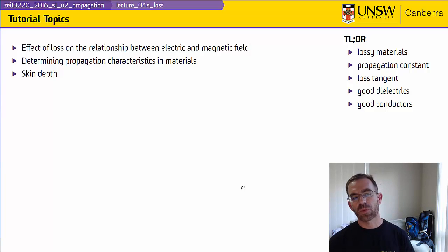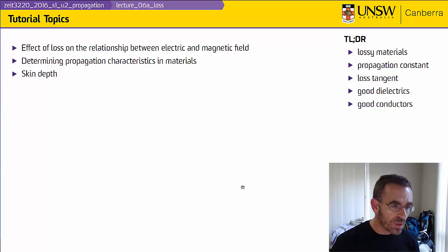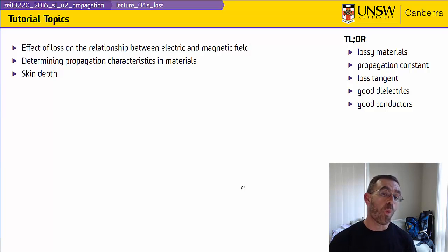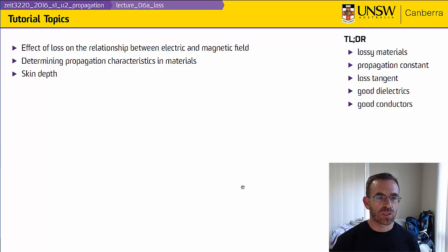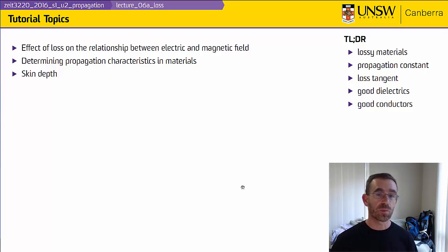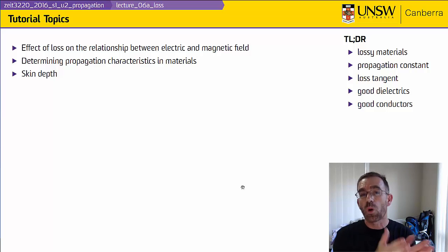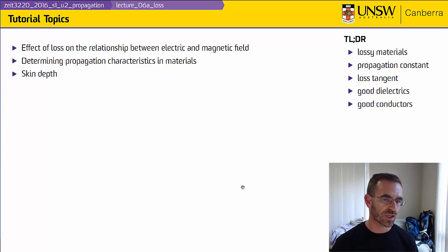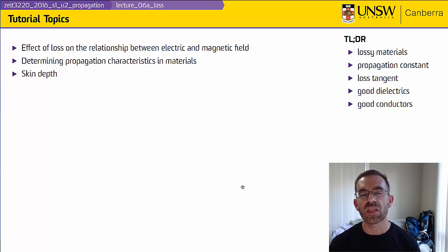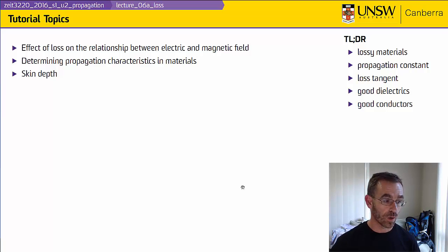That brings us to the end of this lecture. In the tutorial, we'll look at the effects of loss on the relationship between the electric and the magnetic field, and what the meaning of a complex wave impedance is. We'll determine propagation characteristics in different types of materials, identify for what range of frequencies water is a good dielectric versus a good conductor, and explore the effects of skin depth specifically in terms of the resistance of elements in a transmission line or waveguide.